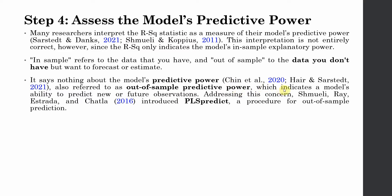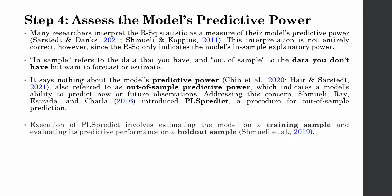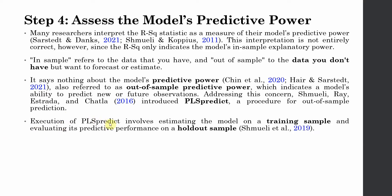The out-of-sample predictive power indicates a model's ability to predict a new or future observation. Addressing this concern, PLS-Predict was introduced as a procedure for out-of-sample prediction. Execution of PLS-Predict involves estimating the model on a training sample and evaluating its predictive performance on the hold-out sample.